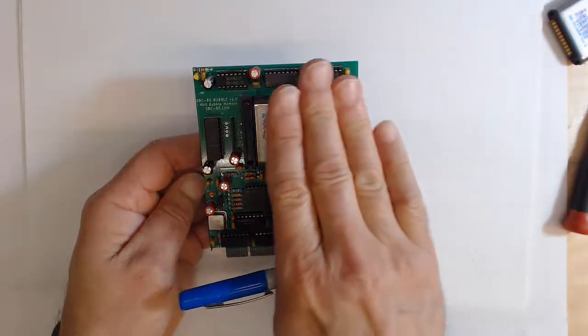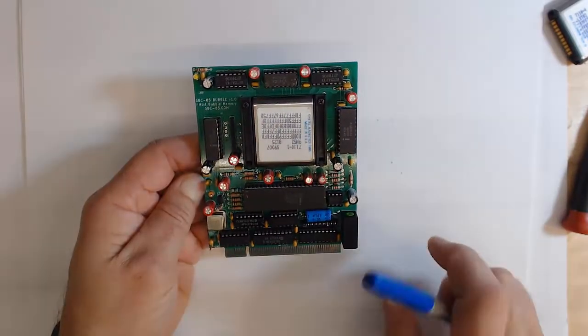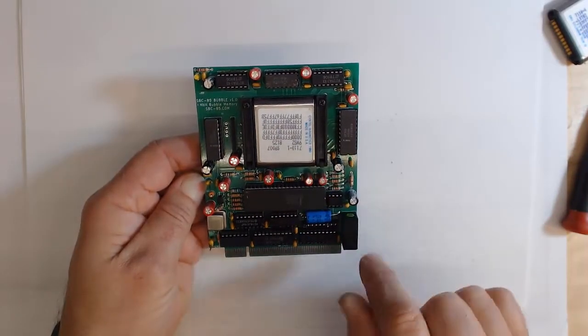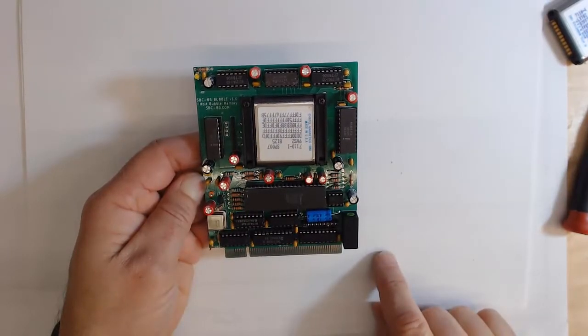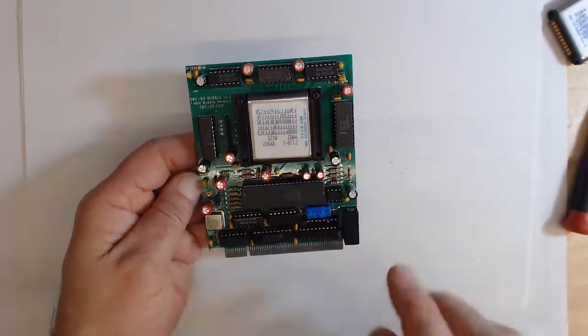We're either looking at the north end of that domain or the south end of that domain, and that's all happening in a two-dimensional plane of bubbles. So this is a one megabit device, so we essentially have a million of these little bubbles floating around in this little two-dimensional plane.